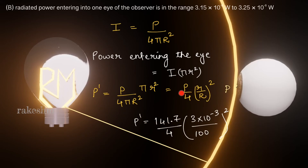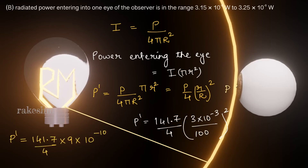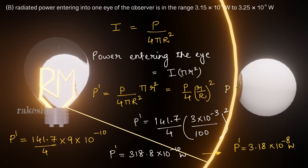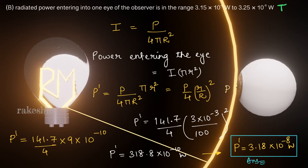Cancelling π with π, we get P' = P/4 × (r/R)². With P = 141.7 W, r = 3 × 10⁻³ m, and R = 100 m: P' = 141.7/4 × (3 × 10⁻³ / 100)² = 141.7/4 × 9 × 10⁻¹⁰ = 318.8 × 10⁻¹⁰ = 3.18 × 10⁻⁸ watts. This falls within the given range, so the statement is true.